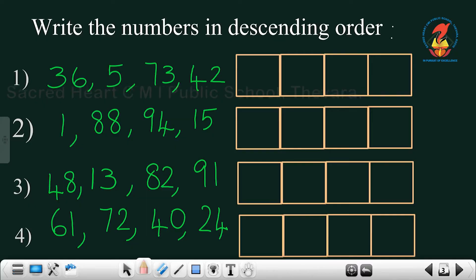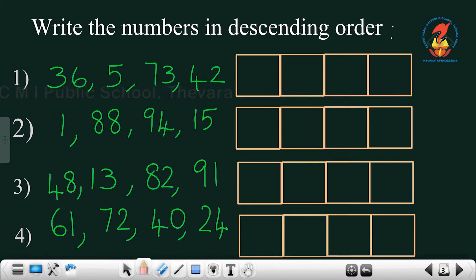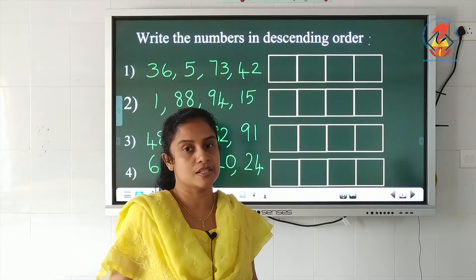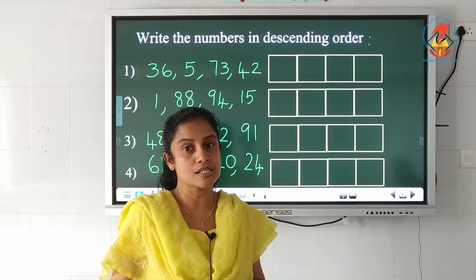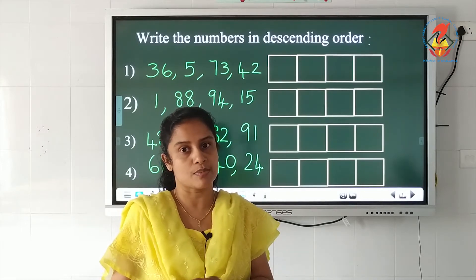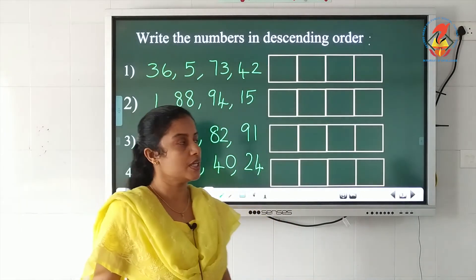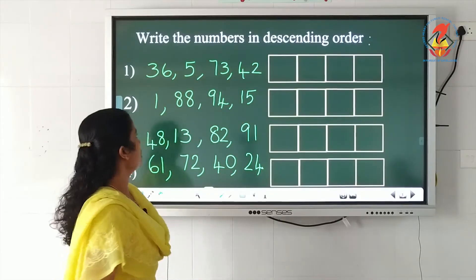Now we will do an exercise. Read the question: write the numbers in descending order. Descending order is arranging the numbers from biggest to the smallest, same as decreasing order.